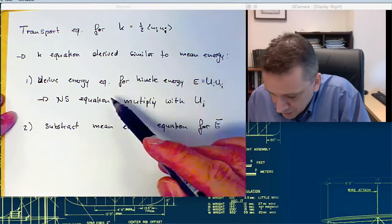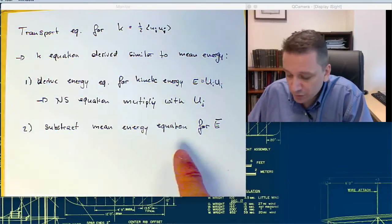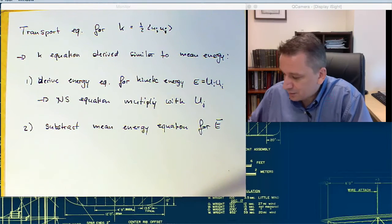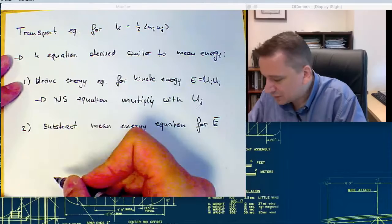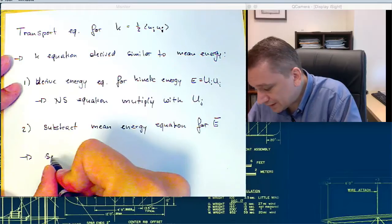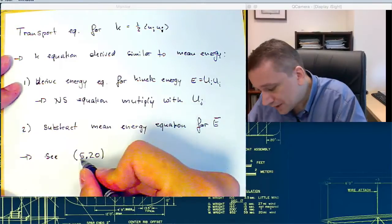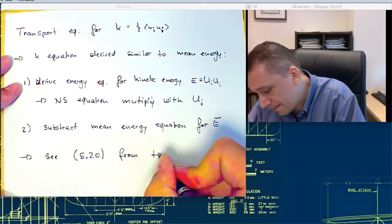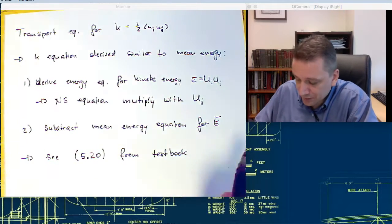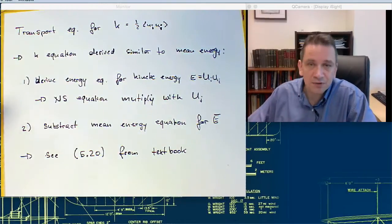So essentially, we are following the same thing that we've done already for the mean flow field. We're just subtracting then afterwards the mean energy. This one is going to be quite tedious, and it's straightforward, but it takes a bit of time. So we're not going to show that all here. If you want to have a look at how it's done exactly, you can have a look at the exercise 5.20 from the textbook.